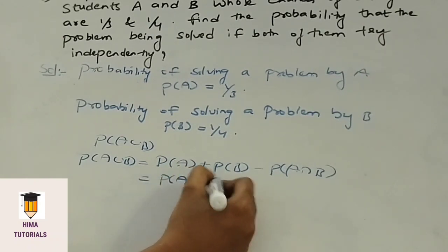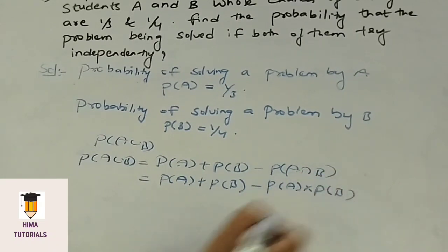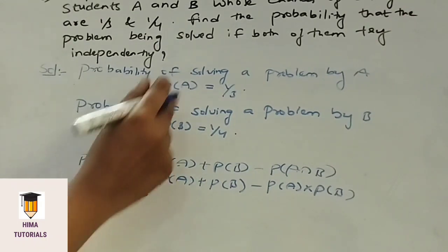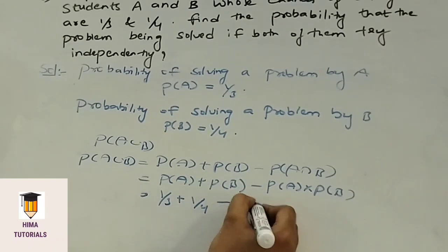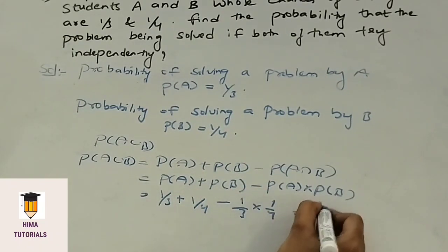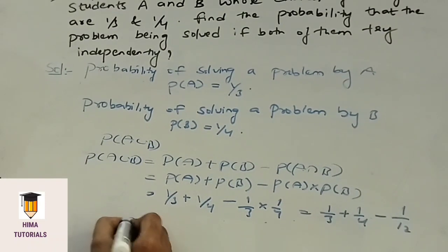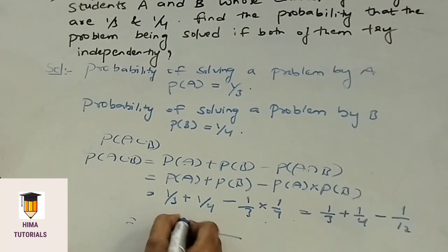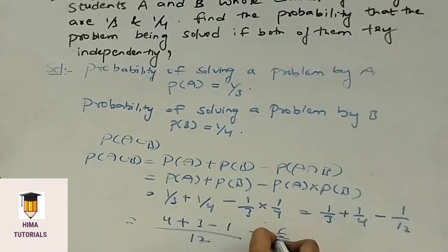Since both are independent, P of A intersection B equals P of A into P of B. So we get P of A union B equals 1 by 3 plus 1 by 4 minus 1 by 3 into 1 by 4. That means 1 by 3 plus 1 by 4 minus 1 by 12. The LCM is 12, so we get 4 plus 3 minus 1 equals 6, giving 6 by 12, which is 1 by 2. Therefore, the probability that the problem is solved if both try independently is 1 by 2.